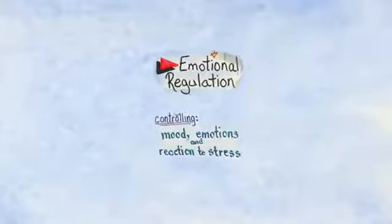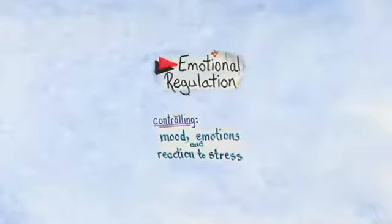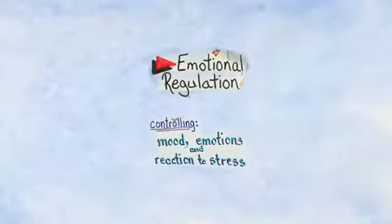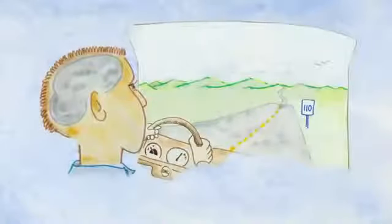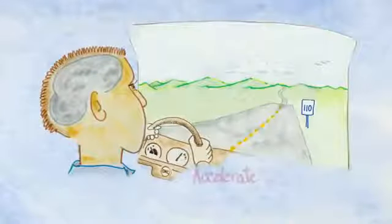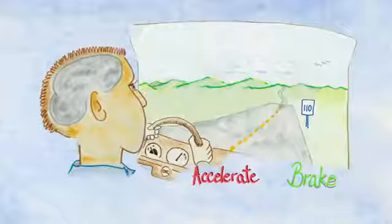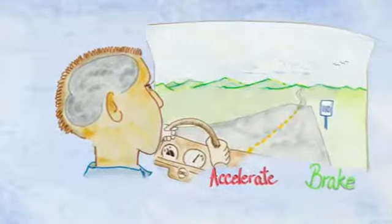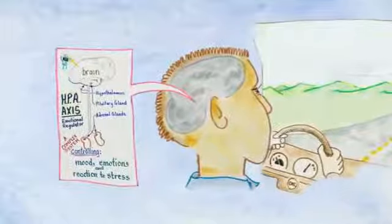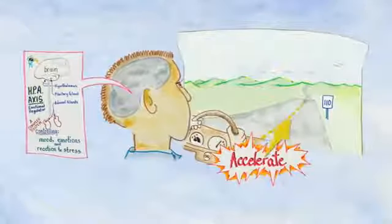Emotional regulation includes our ability to control, either consciously or automatically, our emotions and moods. This requires us to monitor and adjust to our environments. Let's return to our driving analogy and consider how being able to accelerate and brake are important components of driving — this is also true in emotional regulation. Acceleration allows us to move forward, to begin or initiate an activity.